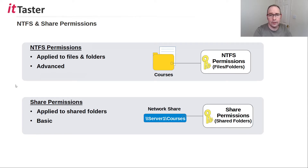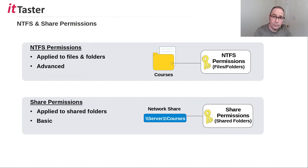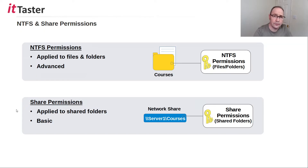Now that we've created the folder structure, the next thing we need to do is set some permissions to limit access to the folder and its contents. When we share a folder in Windows Server, we're pretty much always going to be working with two types of permissions: NTFS permissions and share permissions. NTFS permissions are applied to files and folders, control who can access them and the type of access, and are more advanced than share permissions. Share permissions control access to a shared resource over the network — in our case, a shared folder — and are more basic, applied only to folders.